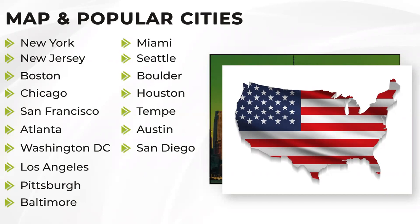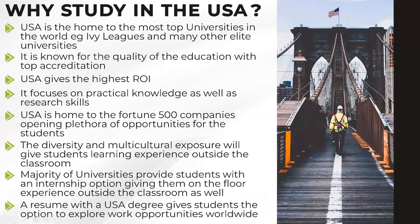USA caters to all students in terms of needs and requirements. No matter what profile the student is coming from, they will always have an option, as there are various types of universities in the USA. The very first question is: why should I study in this country? USA is home to the top universities — there are more than 5,000 universities in USA, so no matter what your profile or GPA is, you will always have an option to study there.